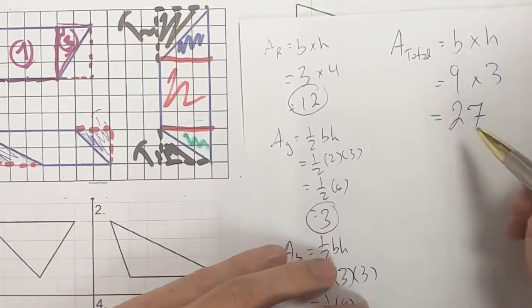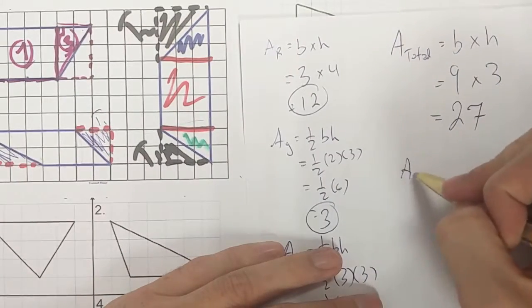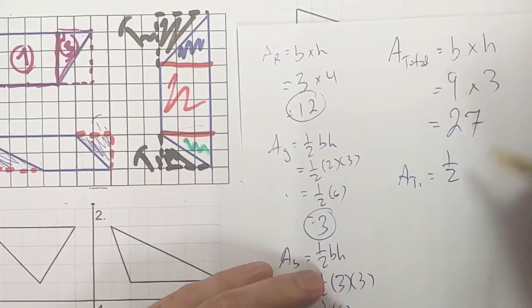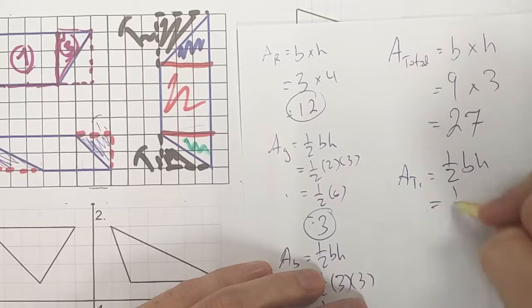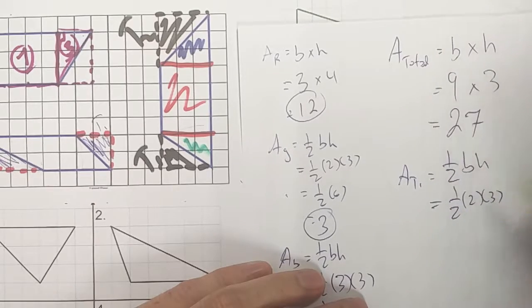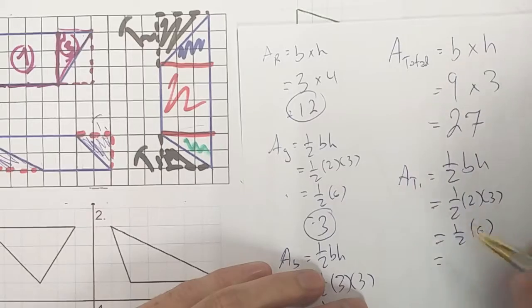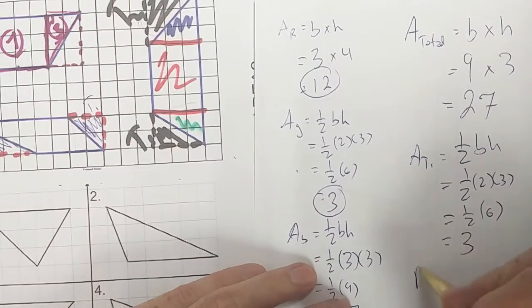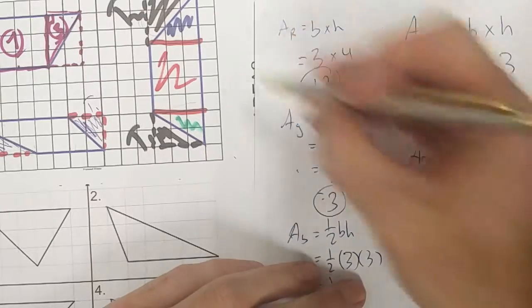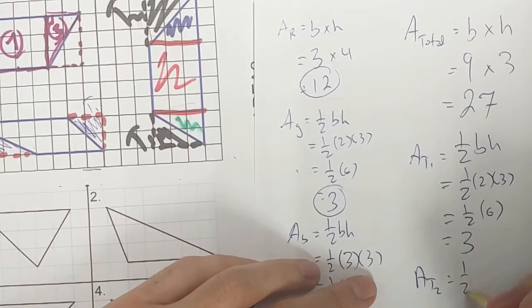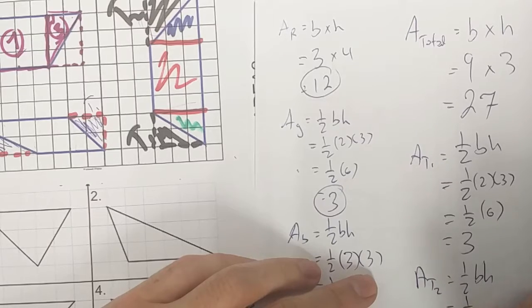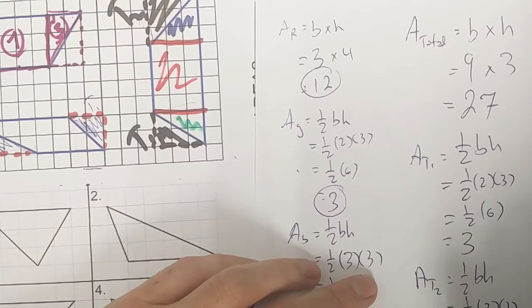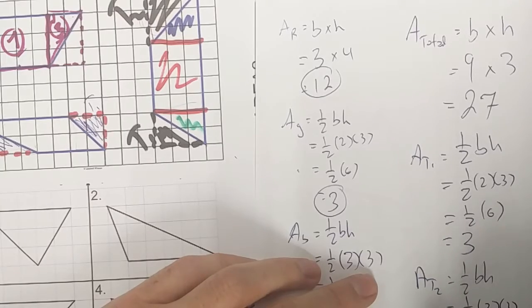All right, from 27, I can take away the area of triangle one. Area triangle one, I've already calculated over here, is the half of the base times height. So it's half of two by three, which is half of six, which is a total of three. And of course, I can take away the area of my triangle two. So triangle two, it's again, three by three, I have half of the base times height, half of three by three, half of three by three is half of nine, half of nine is 4.5.